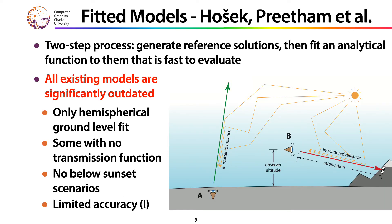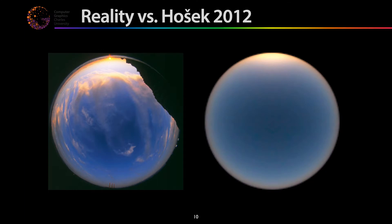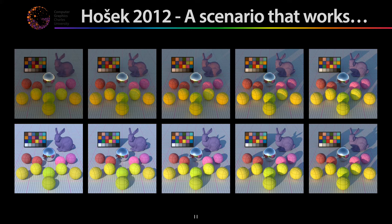And there's also methods like Hoshak, Pritham et al., that did a pre-computation and tried to bake a sky model into something that can be quickly evaluated and plugged into a path tracer. These models are all significantly outdated insofar as they don't provide a full solution — the missing part is colored gray. They only provide in-scattered radiance for direct view rays that go to space, which does not mean they look horrible necessarily if you use them as intended for ground-level renderings.